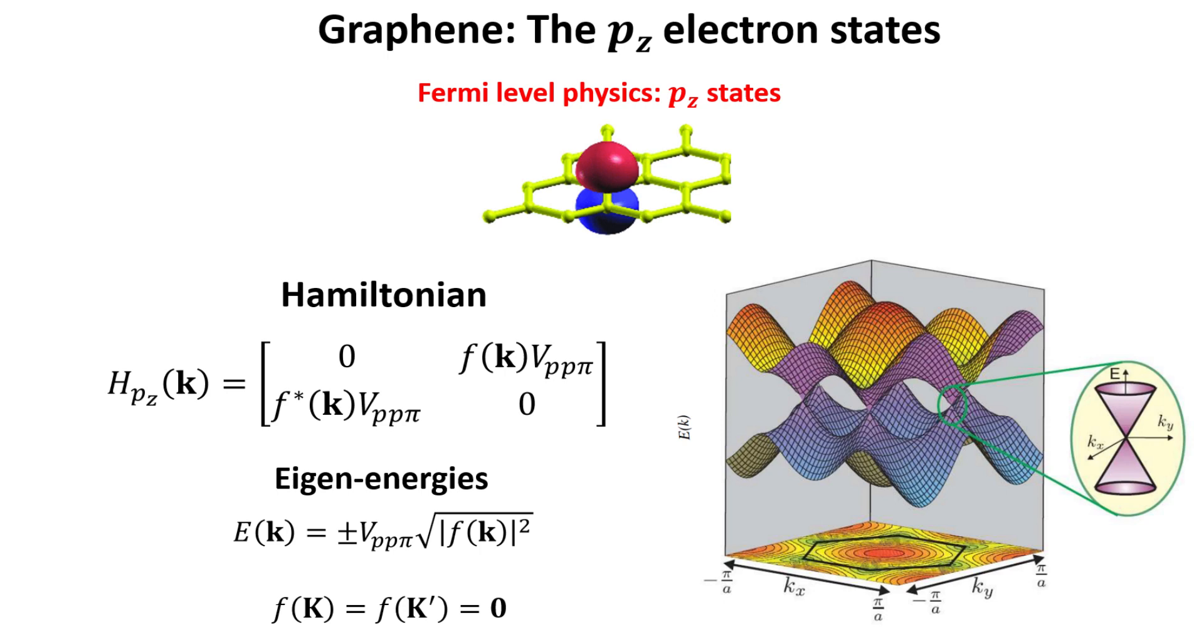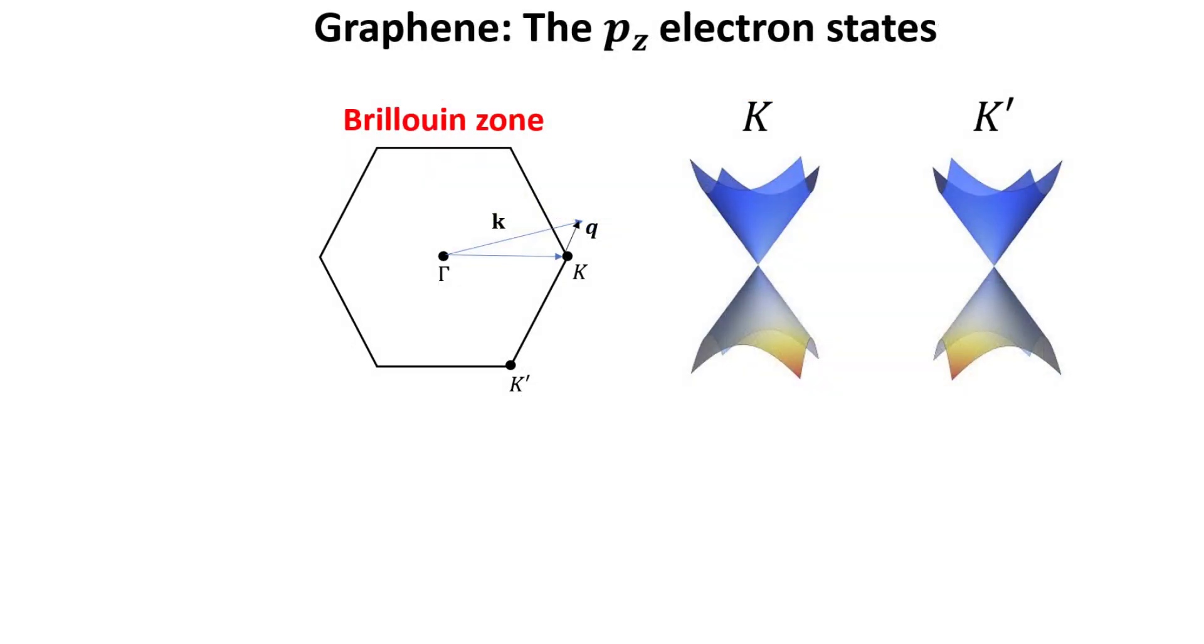To investigate further the behavior of electrons close to the Fermi level, we expand the Hamiltonian at the vicinity of the K and K prime points. To this end we define a momentum vector q as being the momentum relative to the K point, as shown in the figure.